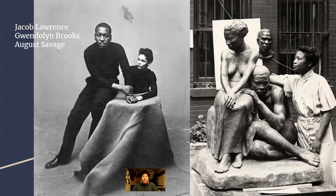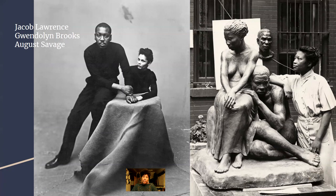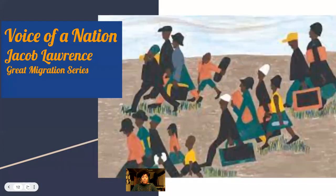Jacob Lawrence was the first African-American visual artist to have commercial success in the United States who was completely trained by Black artists. One of his main teachers was Augusta Savage, the sculptor you see here with some of her sculptures. Jacob Lawrence grew up in Harlem, where he witnessed so many Black people coming out of the South into the North, and so he has many paintings about this journey.